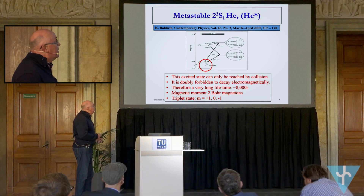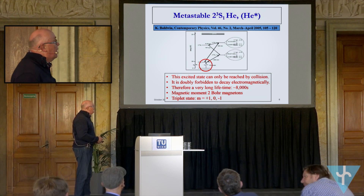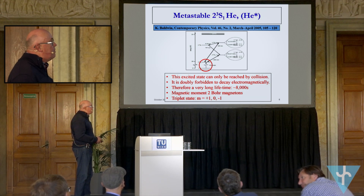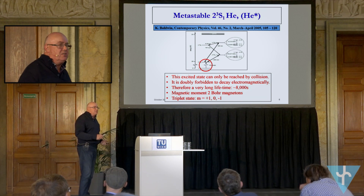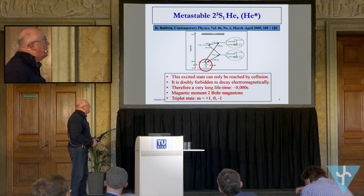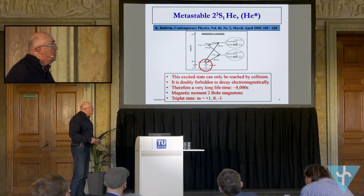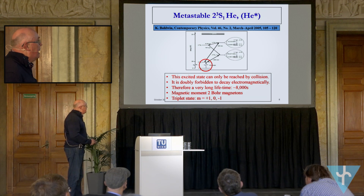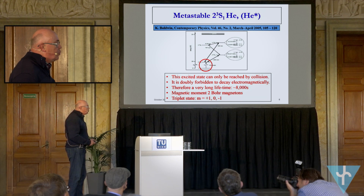One of the things about this state: it's actually doubly forbidden to decay electromagnetically, so for that reason it has a very long lifetime — measured by other groups at 8,000 seconds — which means you've got plenty of time to do your experiment before it might decay. Also, its magnetic moment is two Bohr magnetons, which is quite useful. And it has a triplet state, and what we want to do is use the M equals +1 state.